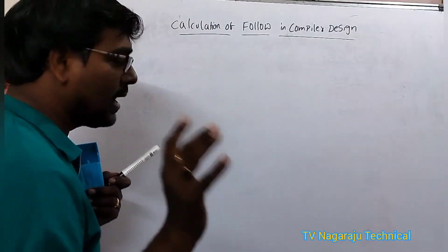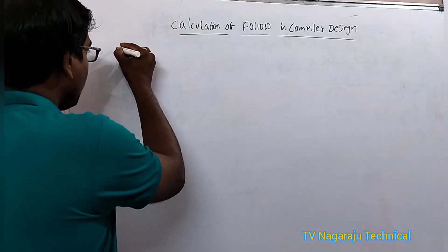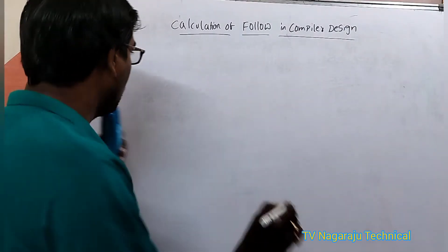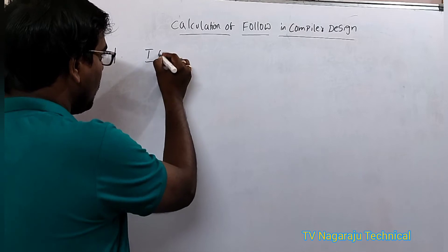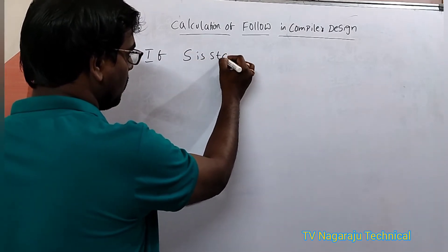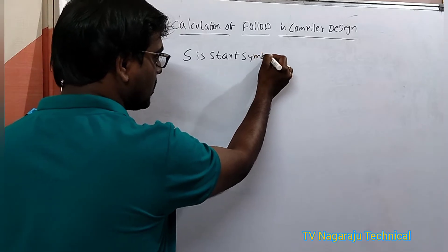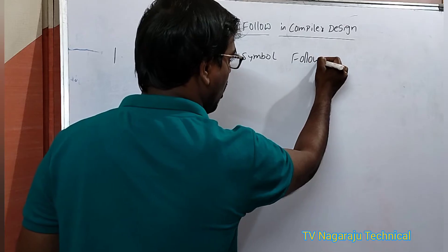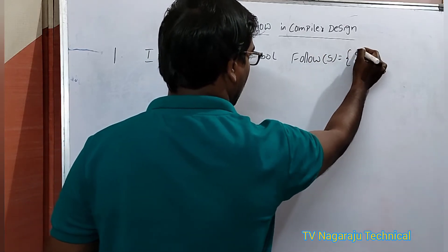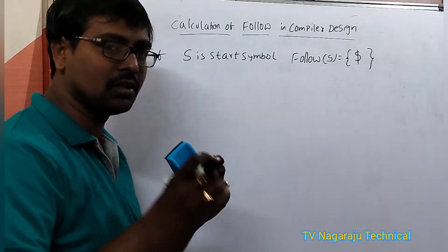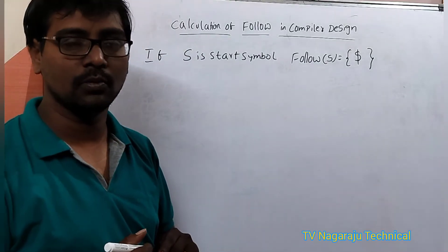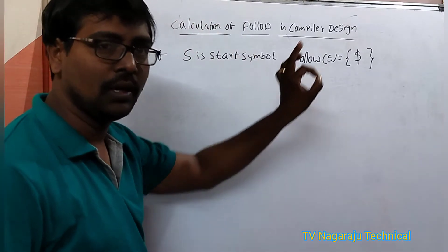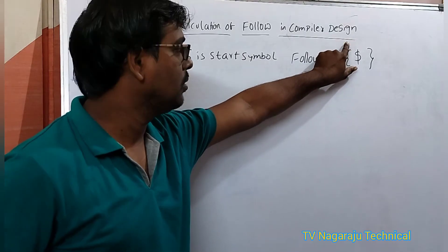The rules for calculating FOLLOW are: first, for any given grammar we have some starting symbol. If S is the start symbol, then FOLLOW of S is equal to dollar. Not only dollar — along with some terminals are also possible depending upon the rules — but the start symbol must and should contain dollar in the FOLLOW.